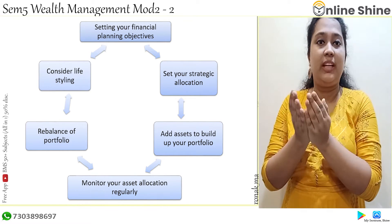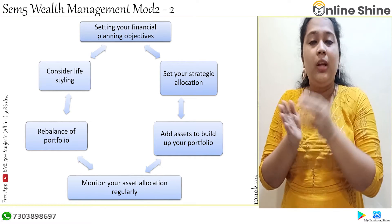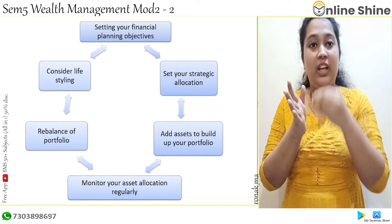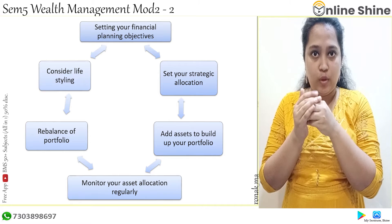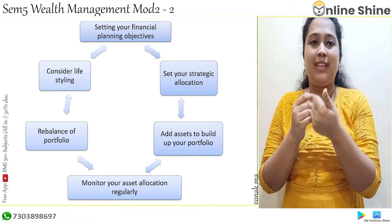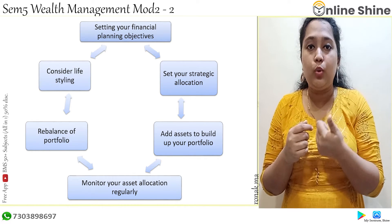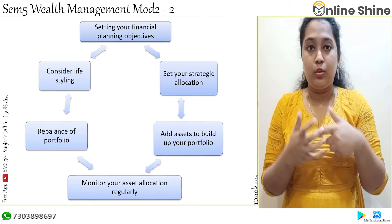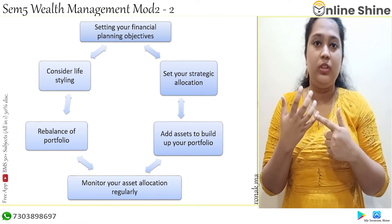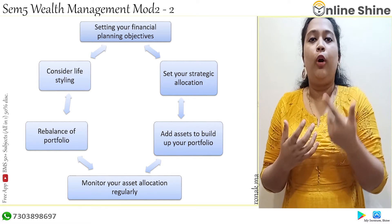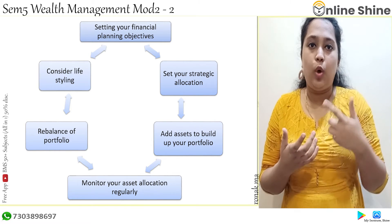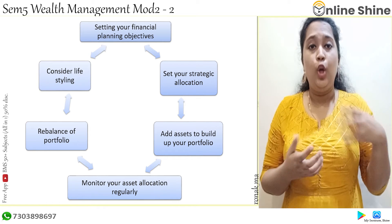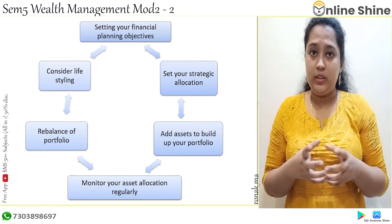First of all, you have to set an objective, because everything will follow from that objective so that you can achieve it. For example, a person wants to buy a house for 2-3 crores in 5 years, so he will plan everything to do that. Or if a person wants a certain amount as his pension after retirement, he will plan all this accordingly.